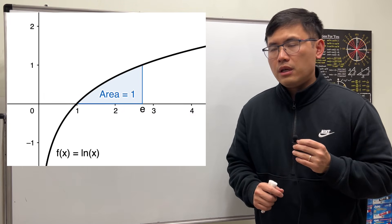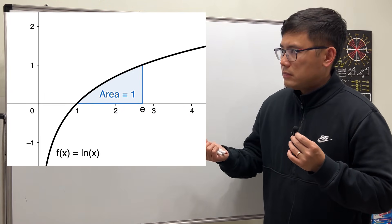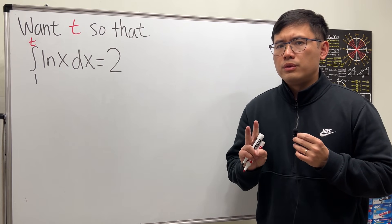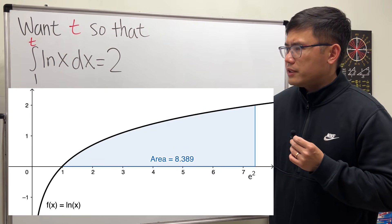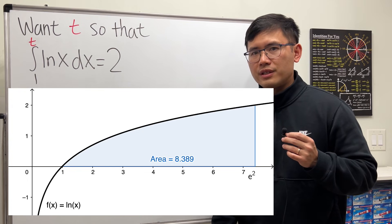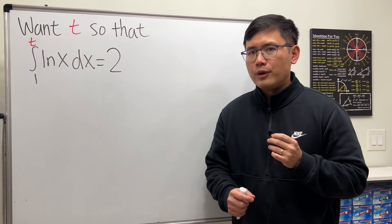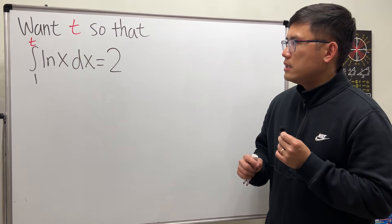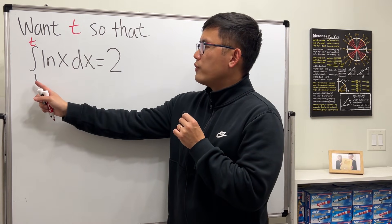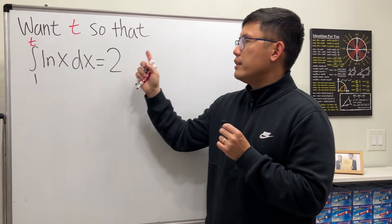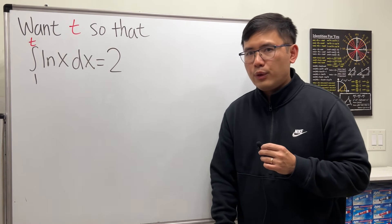Nice, but I wanted to have 2, so I tried it with 1 to e squared but unfortunately it didn't work. So I wonder if it's possible for us to find some number, let's say t, so that if we integrate from 1 to t of ln(x) we end up with 2.